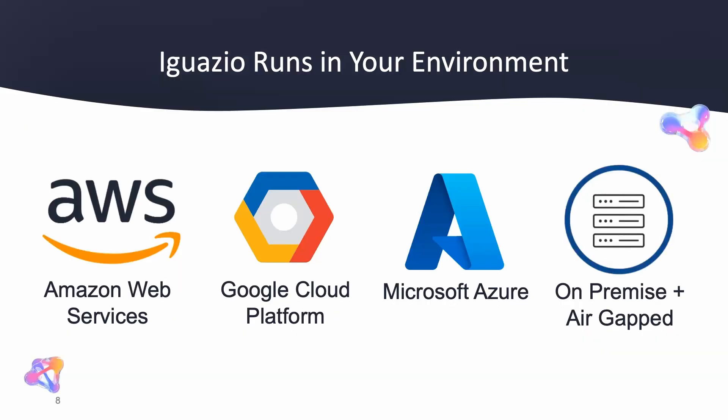Iguazio runs in your environment. Whether this is in your cloud VPC or on your on-premise server, the experience is exactly the same. We support all three of the major cloud providers, as well as on-premise servers, also servers that are air-gapped, so we don't require internet to operate. So if you're in a remote location, this is a great choice. You can take work that you've done, for example, in Amazon, and move it to Google, Azure, or your on-premise server. So for organizations with hybrid or multi-clouds, this is an excellent choice and will not lock you into one particular cloud provider.